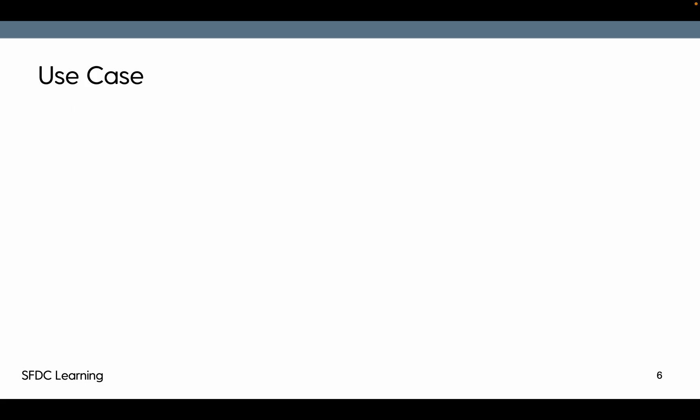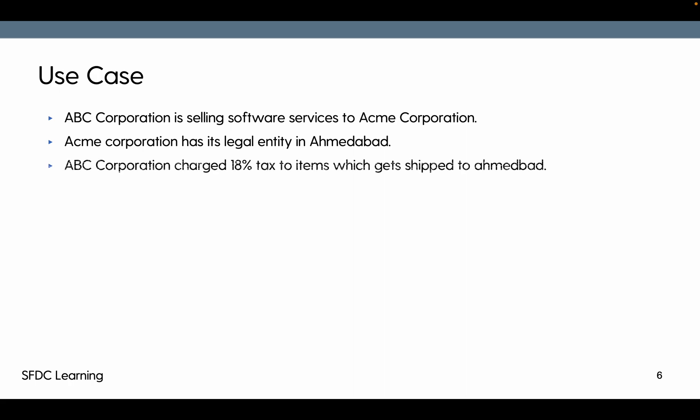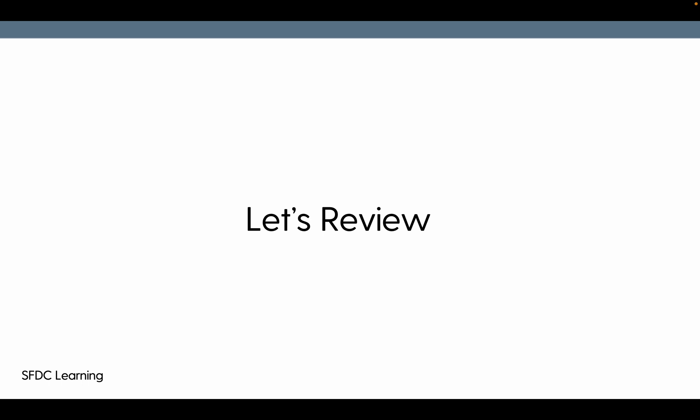Now let's have a use case. ABC Corporation is selling software services to ACME. ACME Corporation has its legal entity in Ahmedabad. ABC Corporation charges 18% tax to items which get shipped to the Ahmedabad location for ACME. So now let's review the configuration.